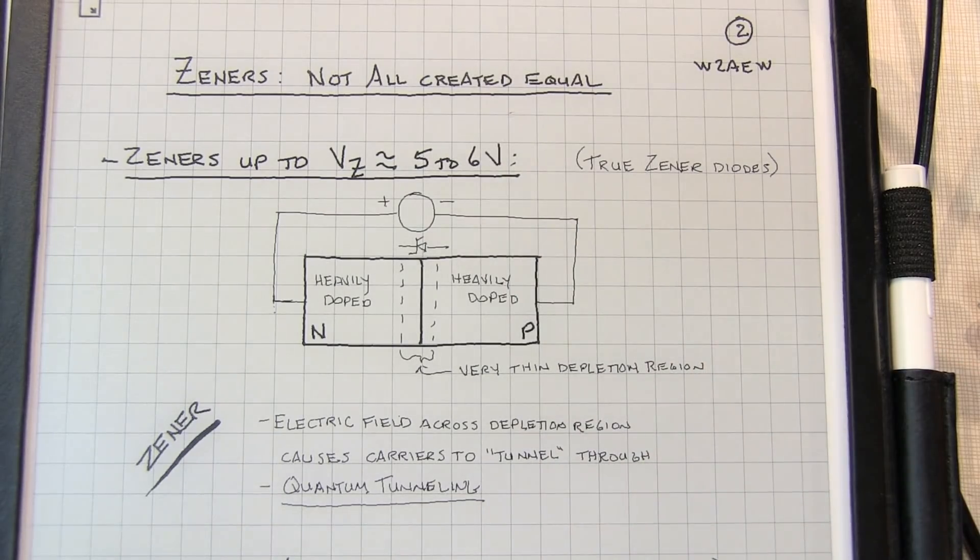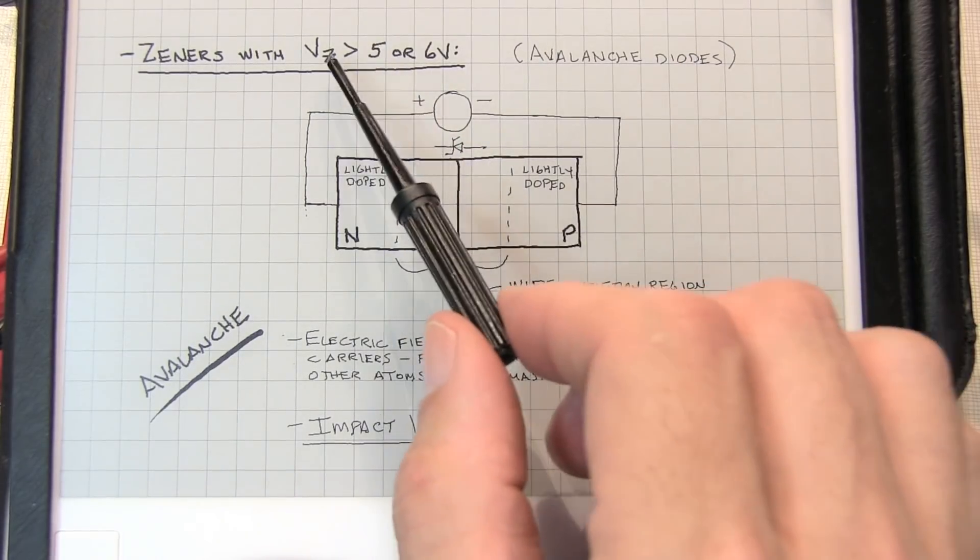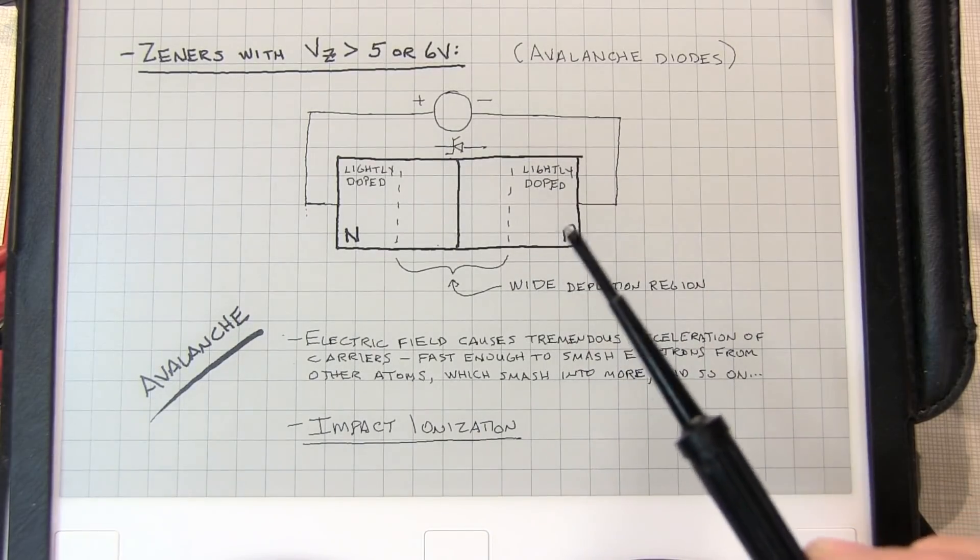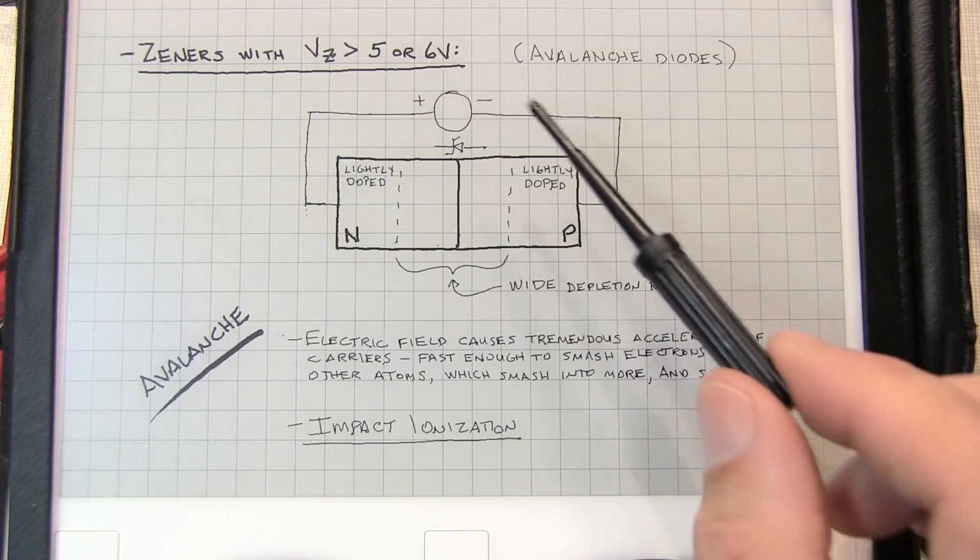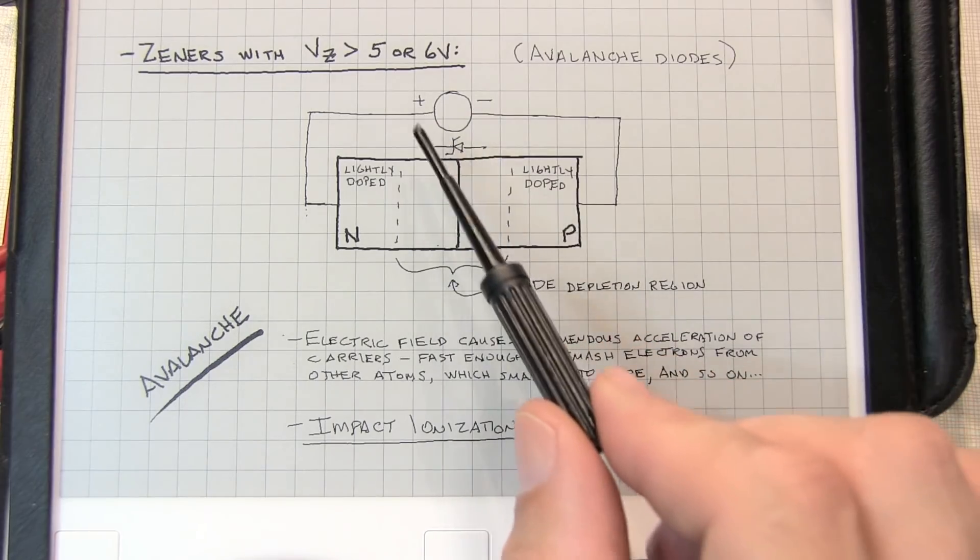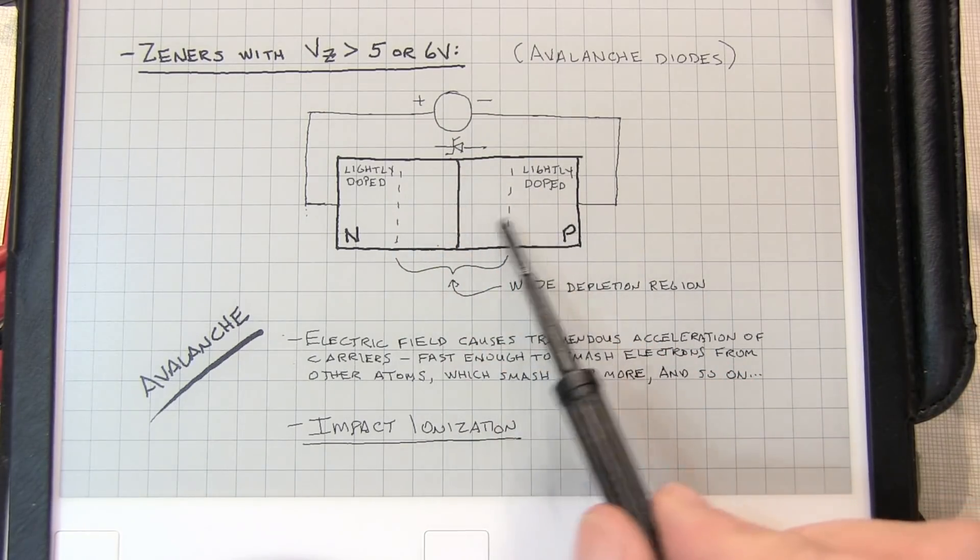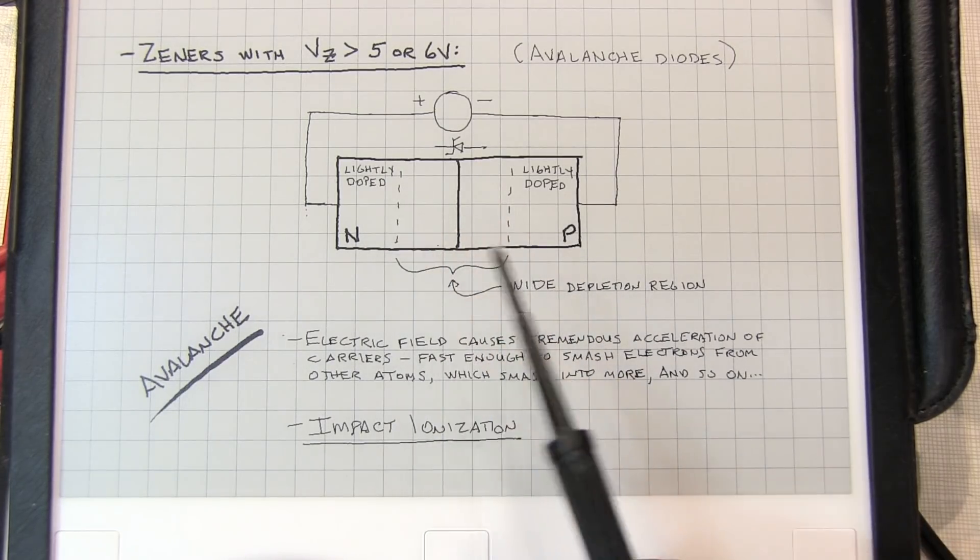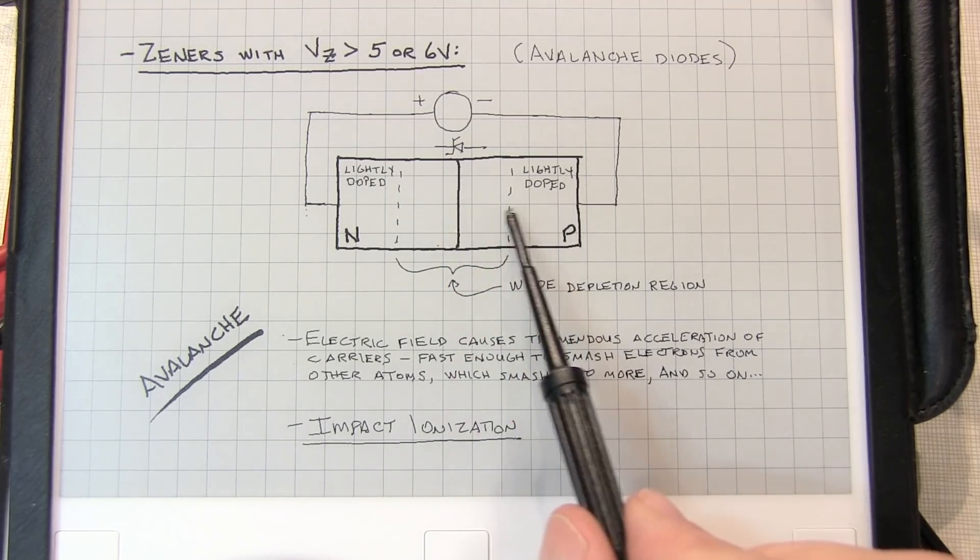By contrast, Zener diodes whose Zener voltage is greater than five or six volts actually operate under a different principle. They're more accurately called avalanche diodes. In these diodes, the P and N junctions are very lightly doped. When you apply that reverse bias, the depletion region actually gets quite wide. Because of that, you get that electric field that appears across that. But because that is a relatively long distance, the electric field will cause some small amount of leakage current.